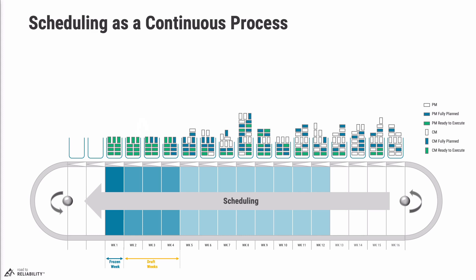Once done, the conveyor belt shows all white blocks moved to future weeks, with a number of fully-planned blue blocks kept in weeks 3 and 4 because they are high-priority work best combined with other work already scheduled in those weeks. The following week, the scheduler will take another view, and if the planner has not converted those fully-planned work orders to ready-to-execute, they will simply be rescheduled to future weeks and some other ready-to-execute work brought forward.